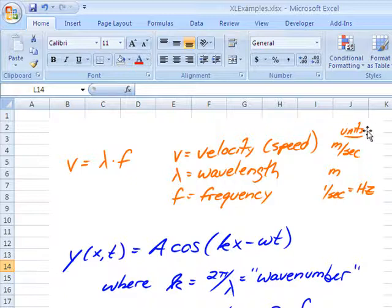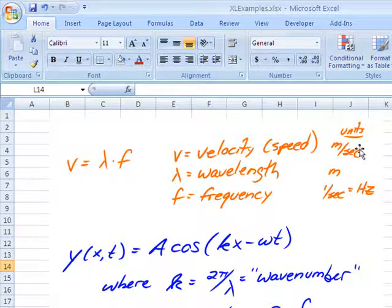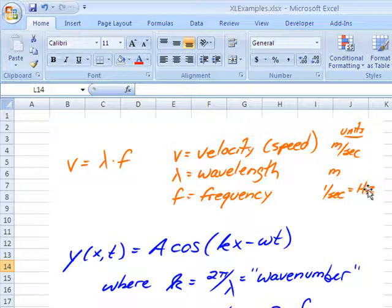And the typical units we use for velocity are meters per second. If you're a barbarian you can have feet per second or miles per hour, but meters per second is typically what we're going to use. Wavelength can be in meters, could be any unit of distance, but here we're going to call it meters. And frequency is usually in waves per second, or simply per second, which is abbreviated hertz or Hz.